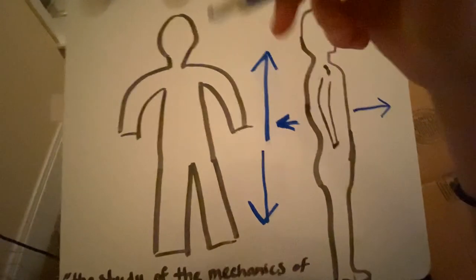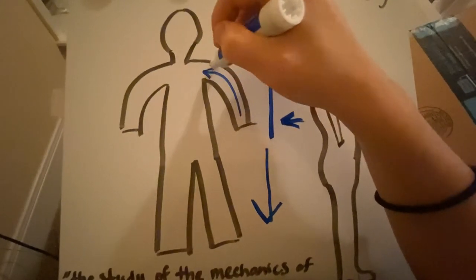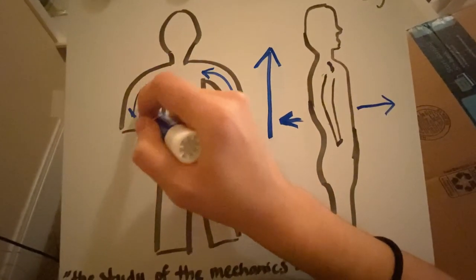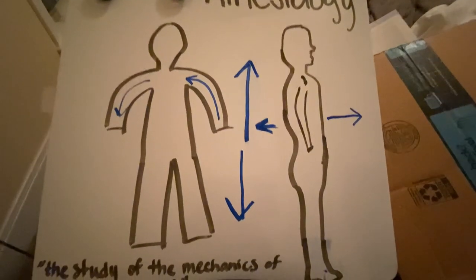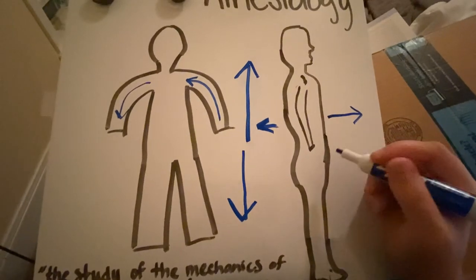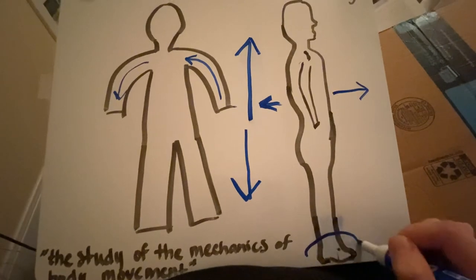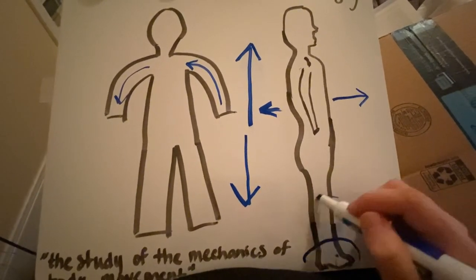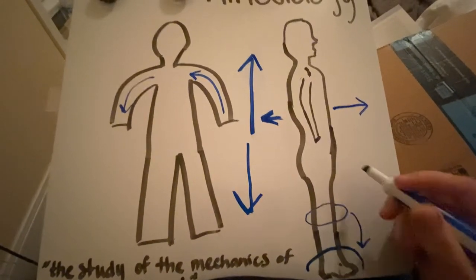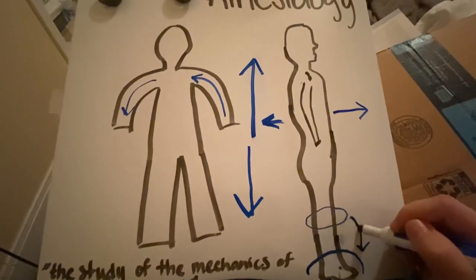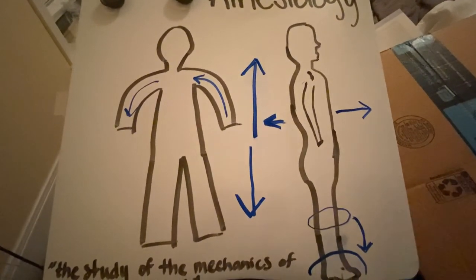Whenever you get into the limbs, if you go towards the body, that's called proximal, and if you go away from the body, that means distal. Anytime you try to describe a position on the body, you have to do it relative to a different body part. For example, the feet would be inferior to the knee — it has to be inferior to something. This can also be distal, and it just depends on what you're trying to describe.